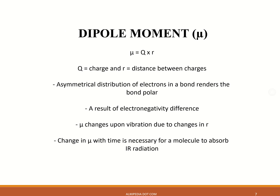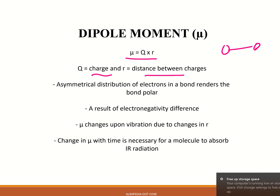The dipole moment (μ) is equal to q times r — that is the charge multiplied by the distance between the atoms in the molecule. For example, in a heteronuclear diatomic molecule, there will be a partial positive and partial negative charge, and the distance between the two atoms defines the dipole moment: μ = q × r.